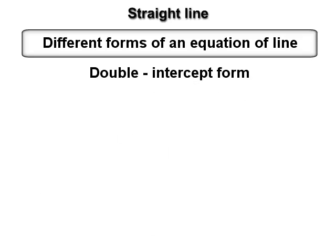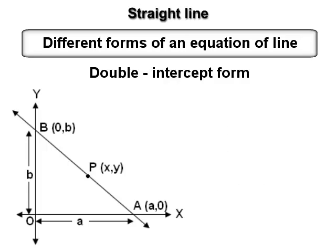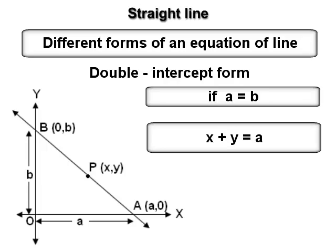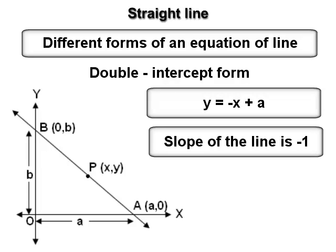Form 4 — Double intercept form: the equation of the line having x-intercept a and y-intercept b, where a ≠ 0 and b ≠ 0, is x/a + y/b = 1. If the line makes equal intercepts on the coordinate axes, then its equation is x/a + y/a = 1, that is x + y = a, or y = −x + a. The slope of this line is −1, so a line making equal intercepts on the coordinate axes has slope −1.